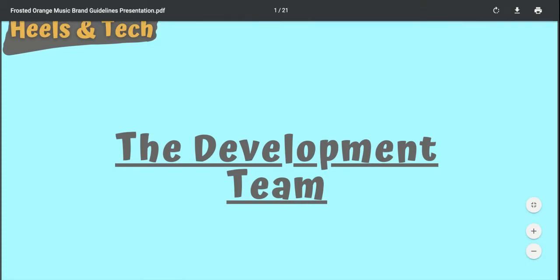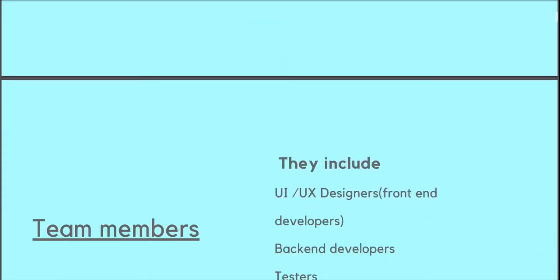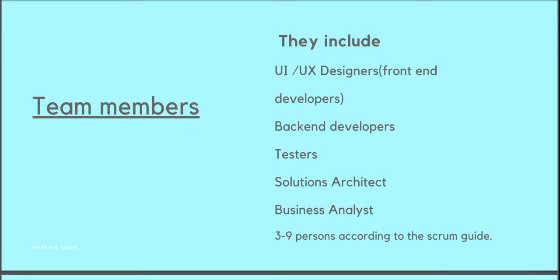This class is for those taking the business analysis class who have done the user requirements, written the business use case, drawn the wireframes, created the customer journey map, process flow, and everything. They have developed the business case for the sponsor, the product has been approved and shipped to the development team. The development team includes the UI/UX designers, backend developers, testers, solution architects, and business analysts — and according to the Scrum Guide, the team shouldn't be less than three or more than nine.